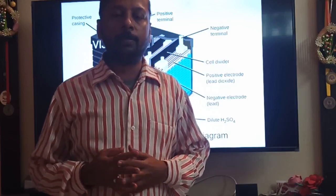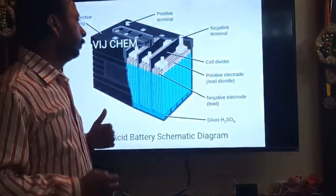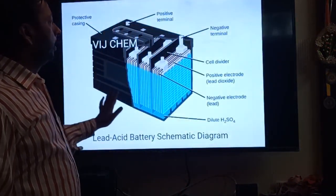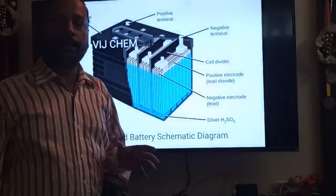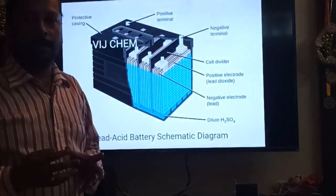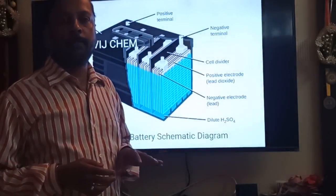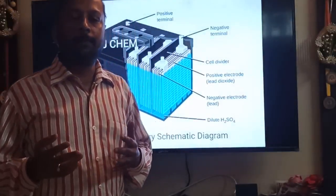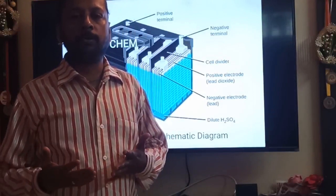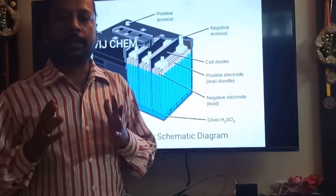Let's get started with the lead acid battery. This is the diagram of the lead acid battery — this is the internal part. Any type of battery is an electrochemical cell. The advantage of lead acid batteries is that they are rechargeable. When commercial electricity supply is present, it will charge itself; when supply goes off, it will act as a source of energy.